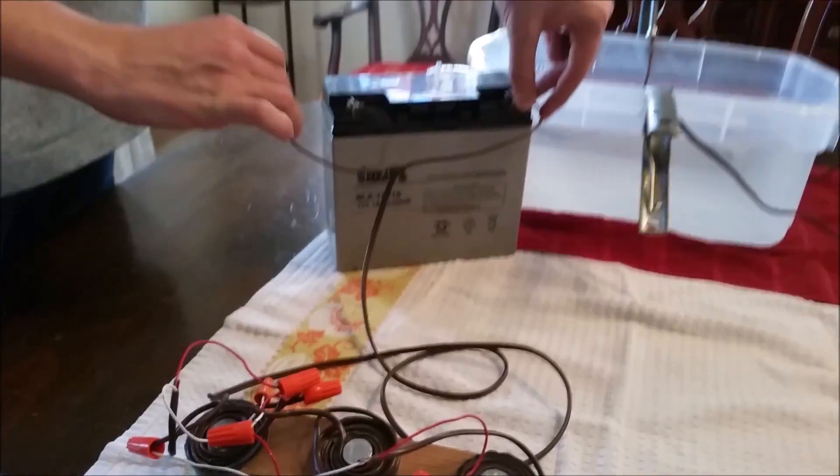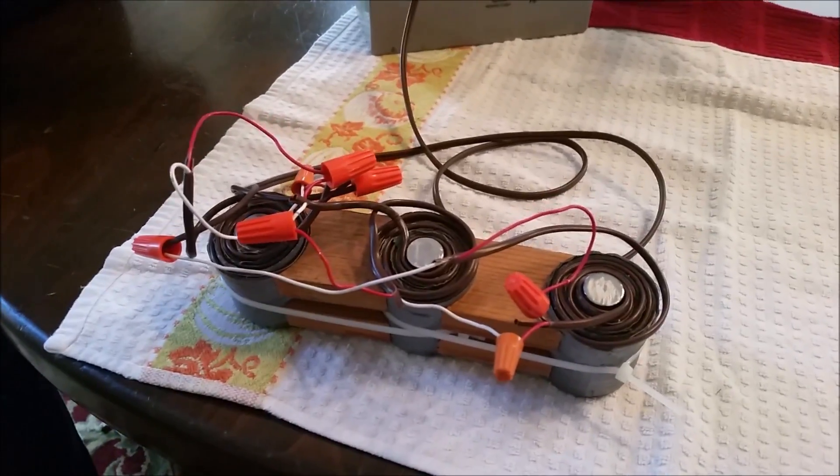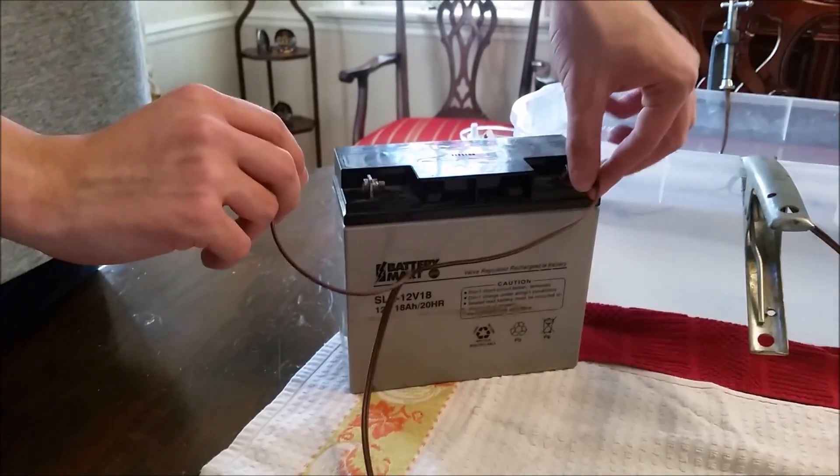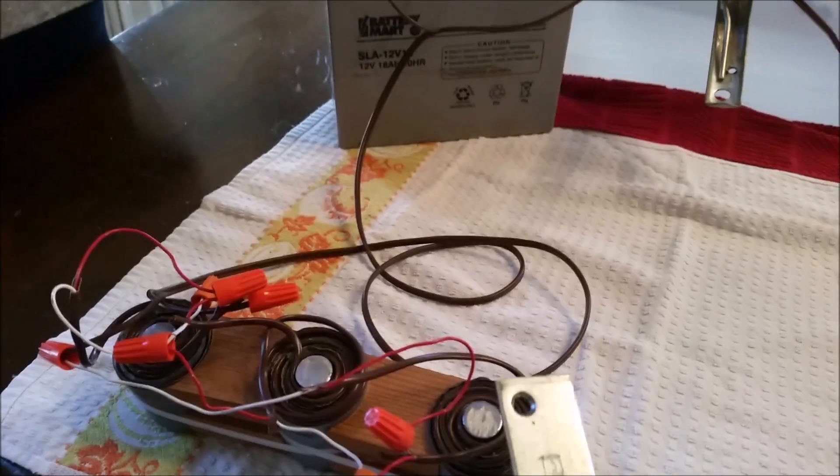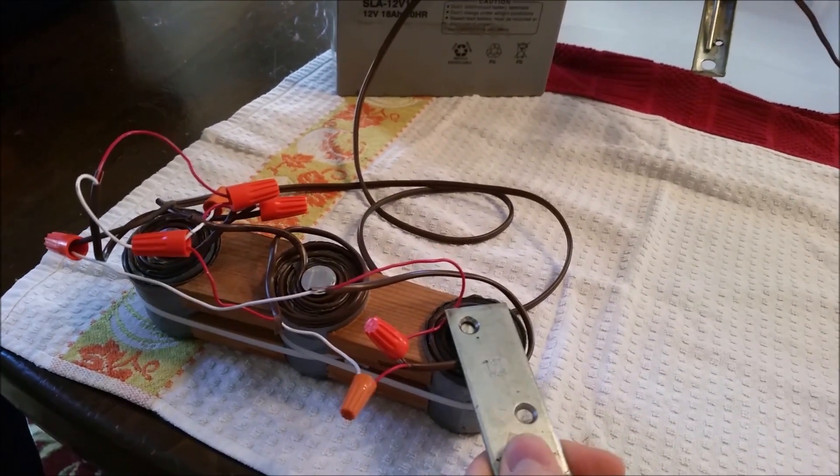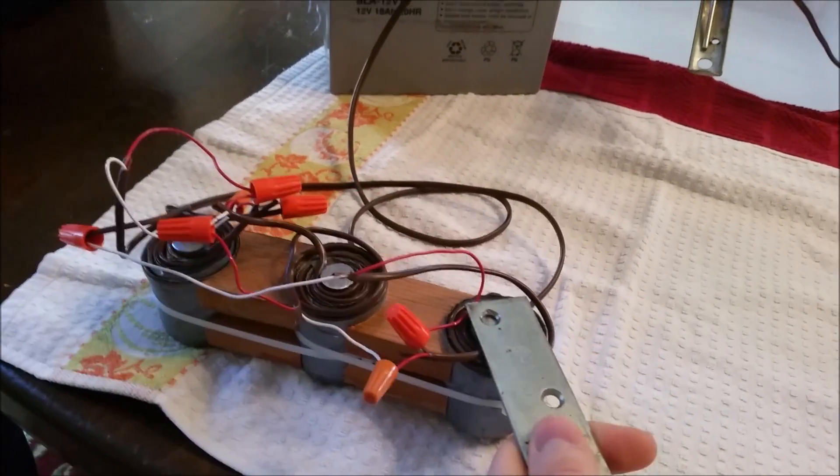Before we put our electromagnet in, we're going to test it. They're all hooked up in series and we're going to hook it up to a 12 volt battery. Because of the resistance of all the coils together, about 11 amps flow through. You can see that it sticks and I can lift the whole thing up.